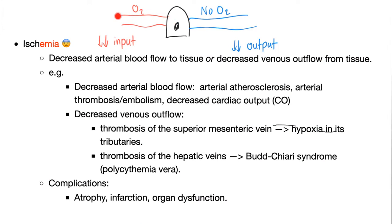Normally oxygen comes into your cell through an artery and exits through a vein — the artery has more oxygen, the vein less. Causes of ischemia: decrease input or decrease output. Decreased input means decreasing the supply of oxygen to the cell; decreased output means blocking venous drainage so deoxygenated blood accumulates. In other words: decreased arterial blood flow or decreased venous outflow. Examples of decreased arterial flow: arterial atherosclerosis, arterial thrombosis, arterial embolism, or decreased cardiac output. Decreased venous outflow: thrombosis of the superior mesenteric vein leading to hypoxia in its tributaries.